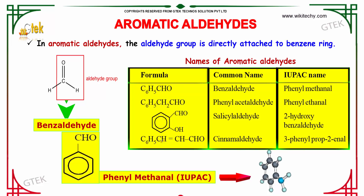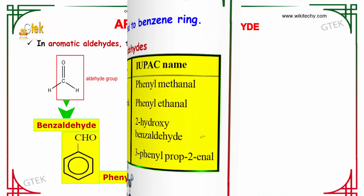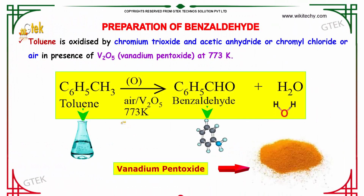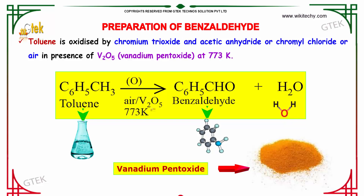Now let us discuss about the preparation of benzaldehyde. Toluene when oxidized with chromium trioxide and acetic anhydride, or chromyl chloride, in the presence of vanadium pentoxide (V2O5) as a catalyst at 773 Kelvin, we obtain benzaldehyde along with water as a side product.